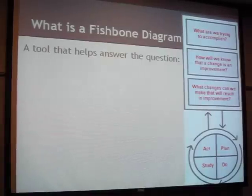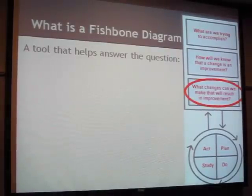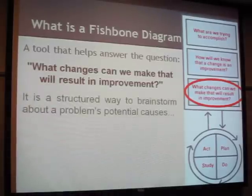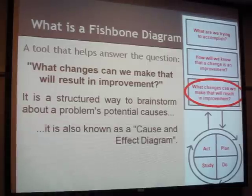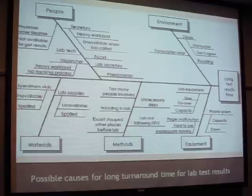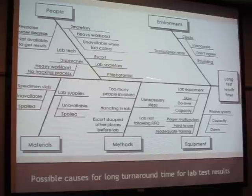You could look at the whole process of that escalation of care from beginning all the way through to end when it resolves. To get to fishbones: going back to the IHI model for improvement, the question that fishbones help us address is the third question - what changes can we make that will result in an improvement? It's a way to brainstorm in a structured fashion all the different possible causes for a problem. It's also known as a cause-and-effect diagram.